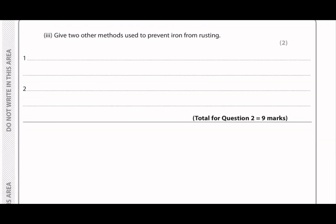So moving on to the last part of question two. Give two other methods used to prevent iron from rusting. So usually they have two main methods. So the first method is to coat iron with something to act as a barrier to prevent the contact between iron and oxygen and water. So that's either plastic, painting, or oil greasing. And this is called the barrier method.